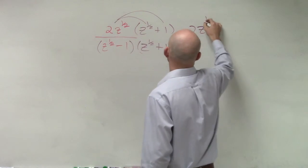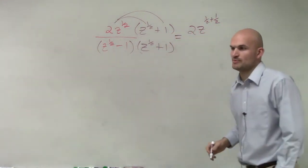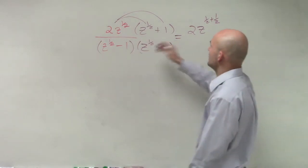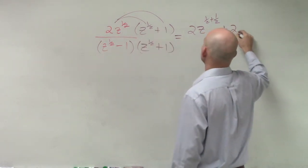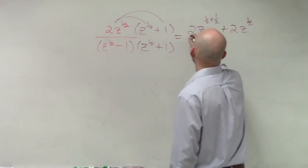I get 2 z to the 1 half plus 1 half, right? Because when you multiply, you add their exponents. Then I get 2 z to the 1 half over,